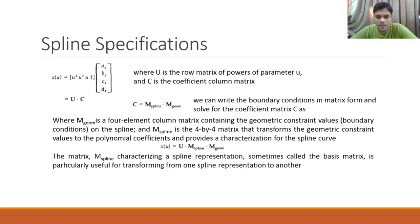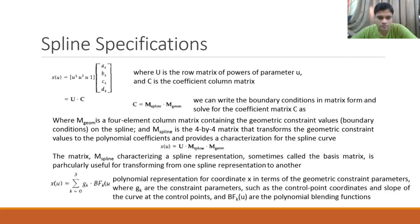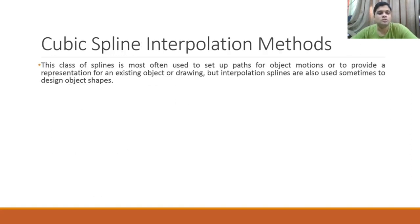We can also write x(u) as a summation from k = 0 to 3 of g(k) · BF_k(u), which is a polynomial representation for coordinate x in terms of geometric constraint parameters. Here g(k) are the constraint parameters such as control point coordinates and slopes at the control points, and BF_k(u) are the polynomial blending functions. The basis matrix is particularly useful for transforming from one spline representation to another.